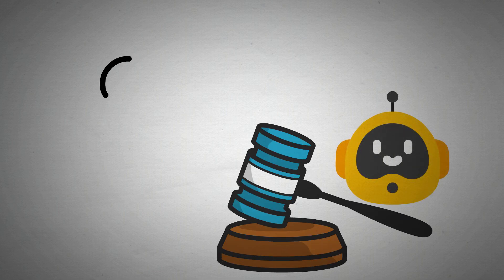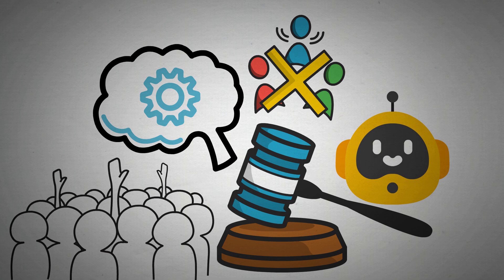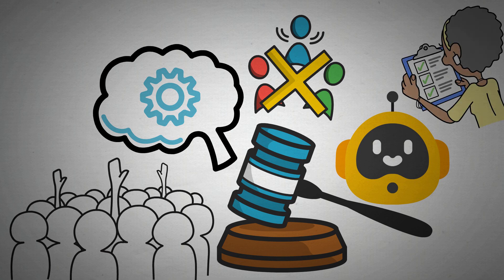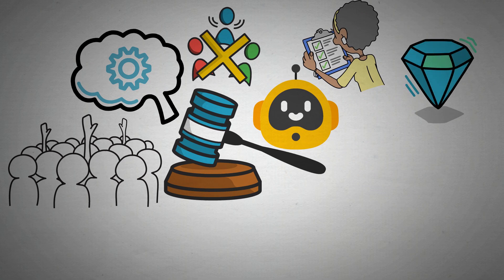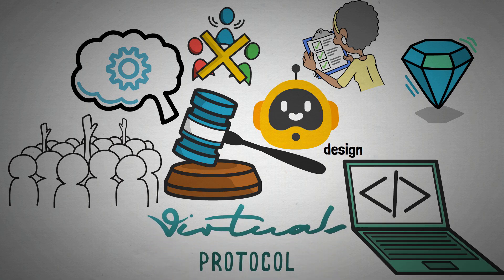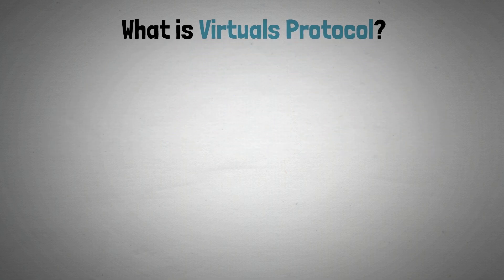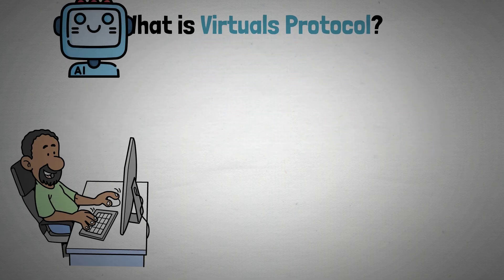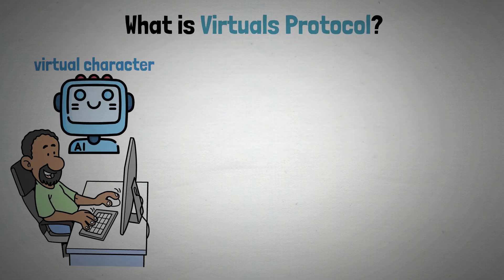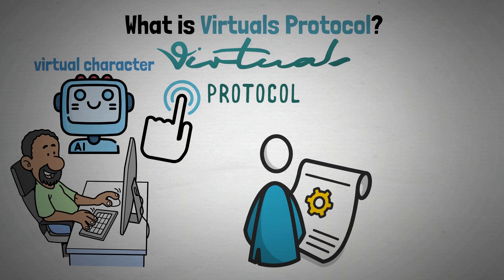Self-governing characters created to carry out specific tasks without human assistance have grown in popularity because of their effectiveness. Given the potential of them, Virtuals Protocol has developed a platform that enables users to design and control AI agents. Anyone can create an AI agent — a virtual character that can interact and engage with its surroundings in a manner similar to that of humans — using the Virtuals Protocol platform on Base.